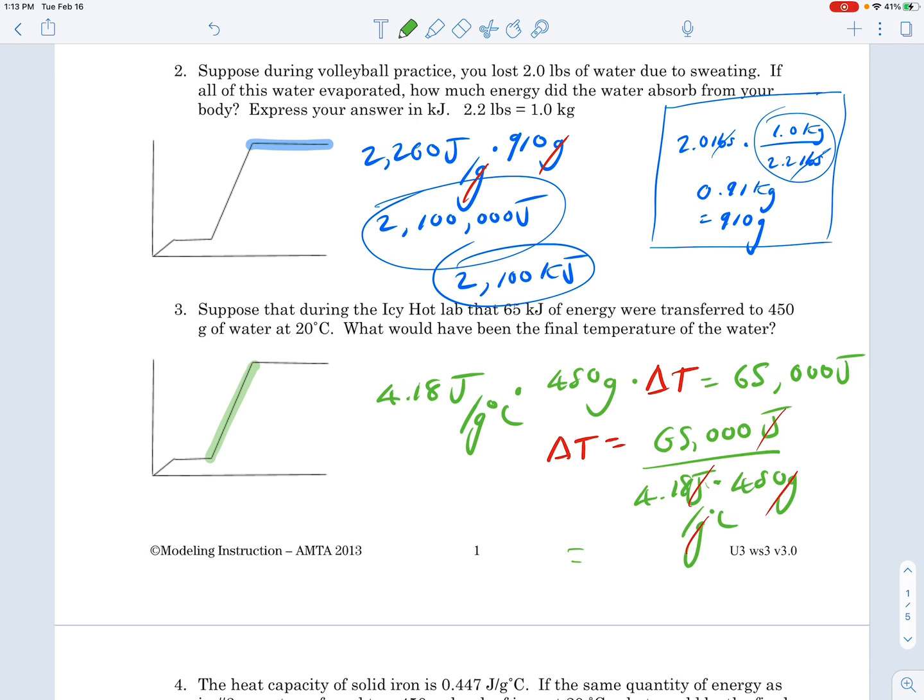If we put all of that in the calculator and round to two significant figures, it's 65,000 divided by (4.18 times 450). I get 34.556, which rounds to 35 degrees Celsius.